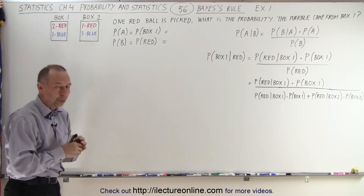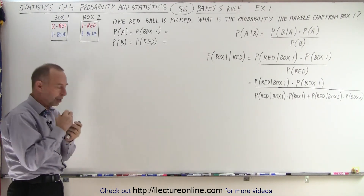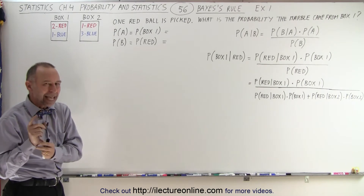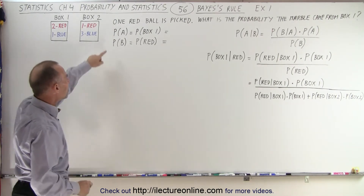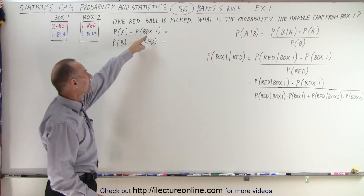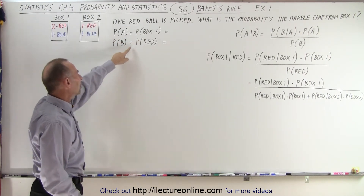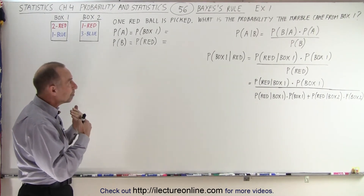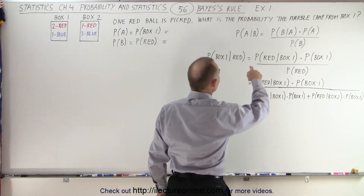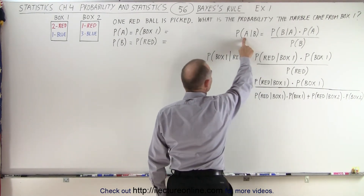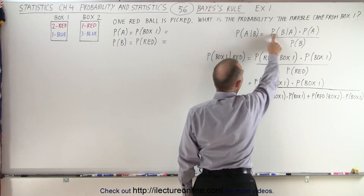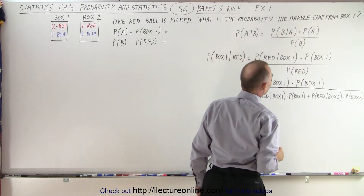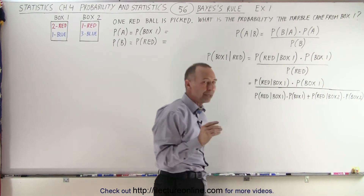One red marble is picked at random. So what is the probability that the marble came from box one? If we name A as the probability that we got it from box one and B as the probability that we picked the red ball, then using Bayes' Theorem or Bayes' Rule we find that the probability of A given that B has occurred is equal to the probability that B will occur given that A has occurred, times the probability that A will occur, divided by the probability that B will occur.